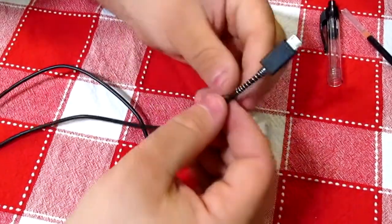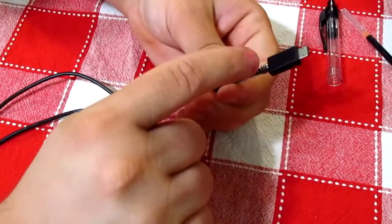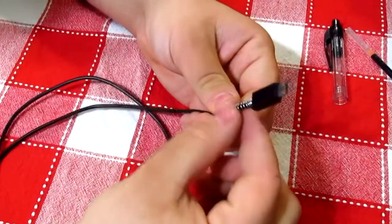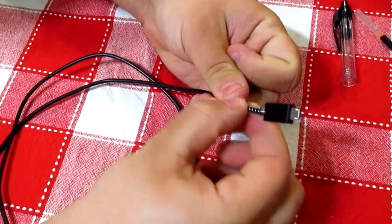And if you wanted to, you can get you a little hot glue. Stick it right there in the corner and hold it in place, but it's pretty snug right now.